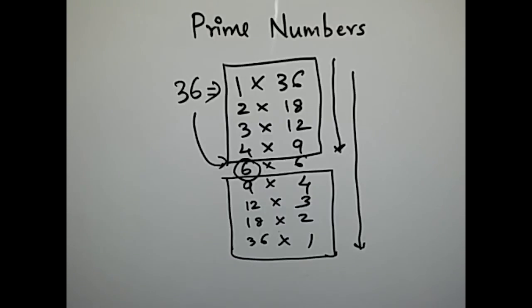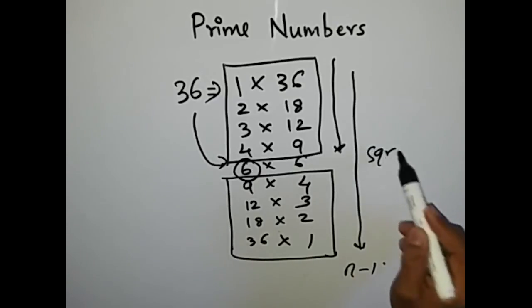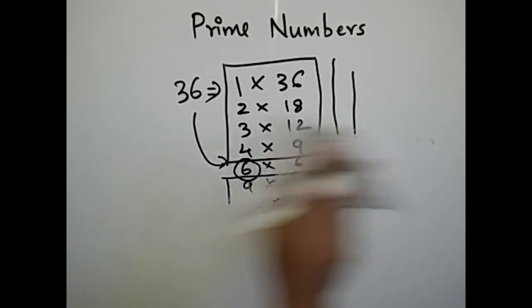This will reduce the time complexity of the problem and make your logic more efficient. So this is the logic of the sum. Because you don't have to travel all the way through n-1, you can stop the looping at square root of the number. This is the logic that will reduce the time complexity.